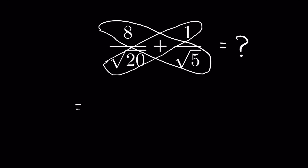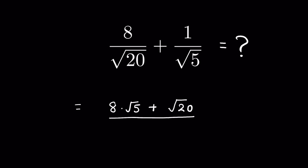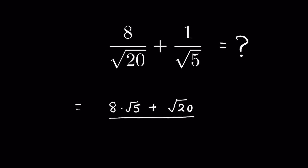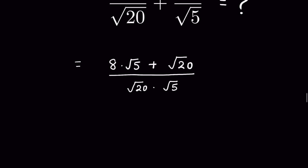So let's write it: 8 multiplied by square root of 5, then plus 1 multiplied by square root of 20, upon the product of the denominators, which is square root of 20 times square root of 5.